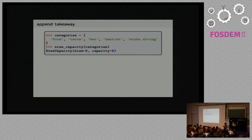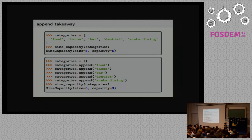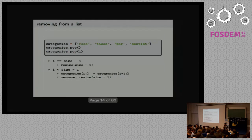One thing to note about append: let's say you want to create a list with its content known when you declare it. Its size would be 5 and its capacity would be 5. If instead you decide to create an empty list and call append repeatedly, due to the growth pattern the size would also be 5, but the capacity would be 8. So even though those two lists contain the same items, they're not the same and they don't have the same memory footprint.